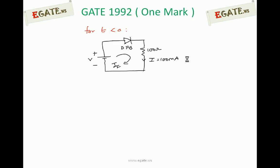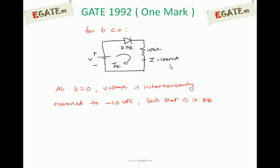The combination is a diode along with a resistor. A diode in series with a 100 ohm resistor, forward biased with an external voltage such that the current is 100 mA. And at T equal to 0, the voltage is instantaneously reversed to minus 10V such that the diode is reverse biased.